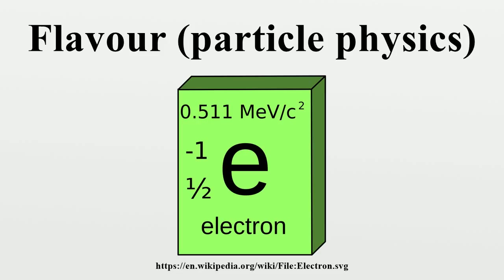Quantum Chromodynamics: Flavor symmetry is closely related to chiral symmetry. Quantum chromodynamics contains six flavors of quarks. However, their masses differ and as a result they are not strictly interchangeable with each other. The up and down flavors are close to having equal masses, and the theory of these two quarks possesses an approximate SU(2) symmetry. Under some circumstances, the masses of the quarks can be neglected entirely.